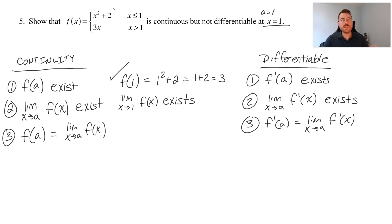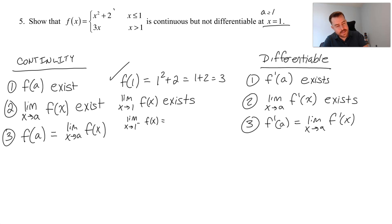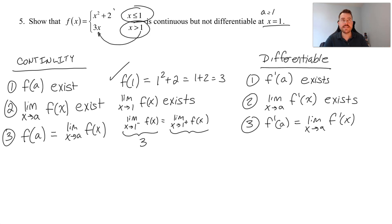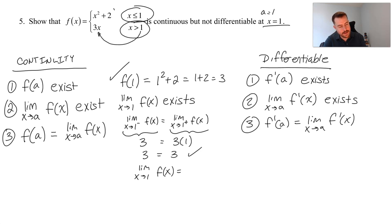Next we need to show that the limit as x approaches one exists. A limit exists only if the left-hand limit equals the right-hand limit. From the left, using the top equation, we get one squared plus two equals three. From the right, for x greater than one, we substitute into the second equation: three times one equals three. So three equals three, and the limit exists and equals three.